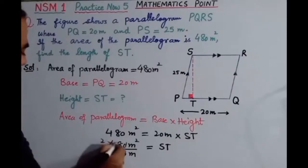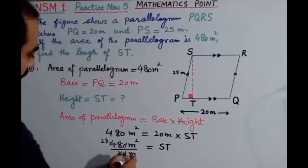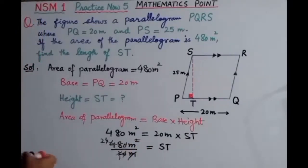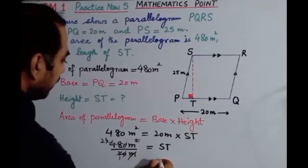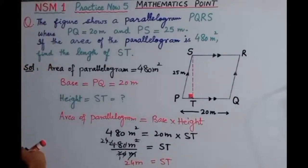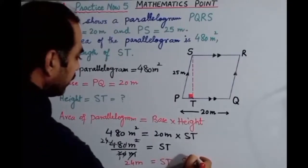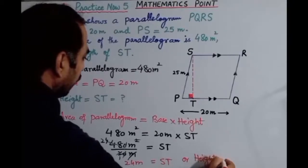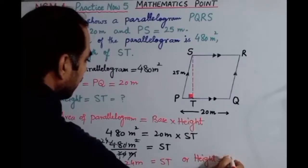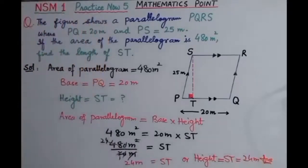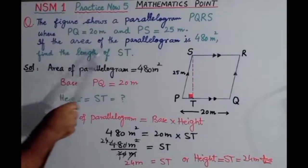We simplify: 480 divided by 20 gives us 24. Cancelling the units, meter square over meter gives meter. Therefore, ST is equal to 24 meters. So the height of this parallelogram, which is ST, equals 24 meters. This is the required answer.